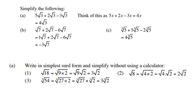(b): square root of 7 plus 2 times square root of 7 minus 6 times square root of 7. So 1 square root of 7 plus 2 gives you 3 square root of 7, minus 6 gives you negative 3 square root of 7. Check this one on the calculator. (c): cube root of 5 plus 5 times cube root of 5 minus 2 times cube root of 5. The same here: 1 plus 5 gives 6, minus 2 gives 4 cube root of 5.